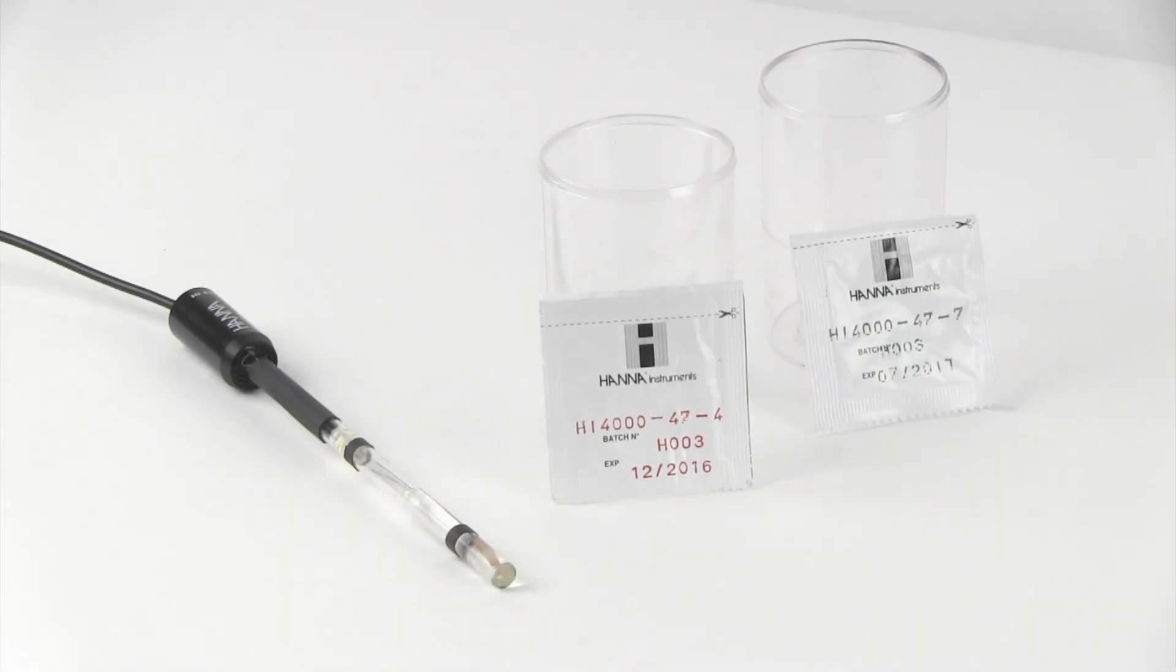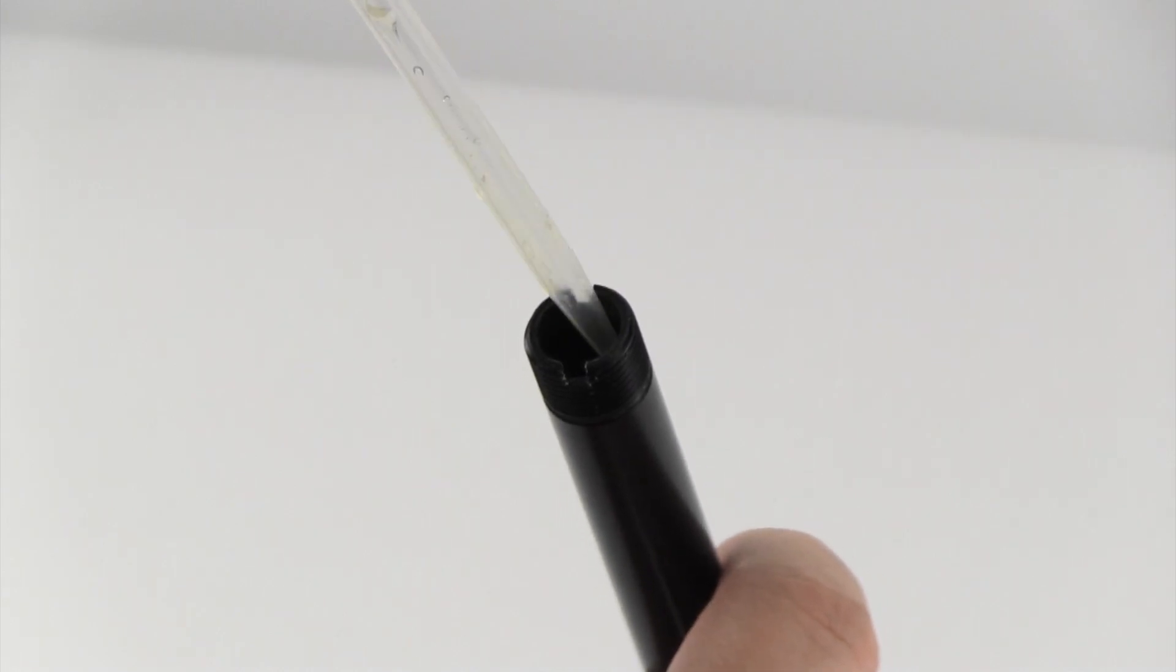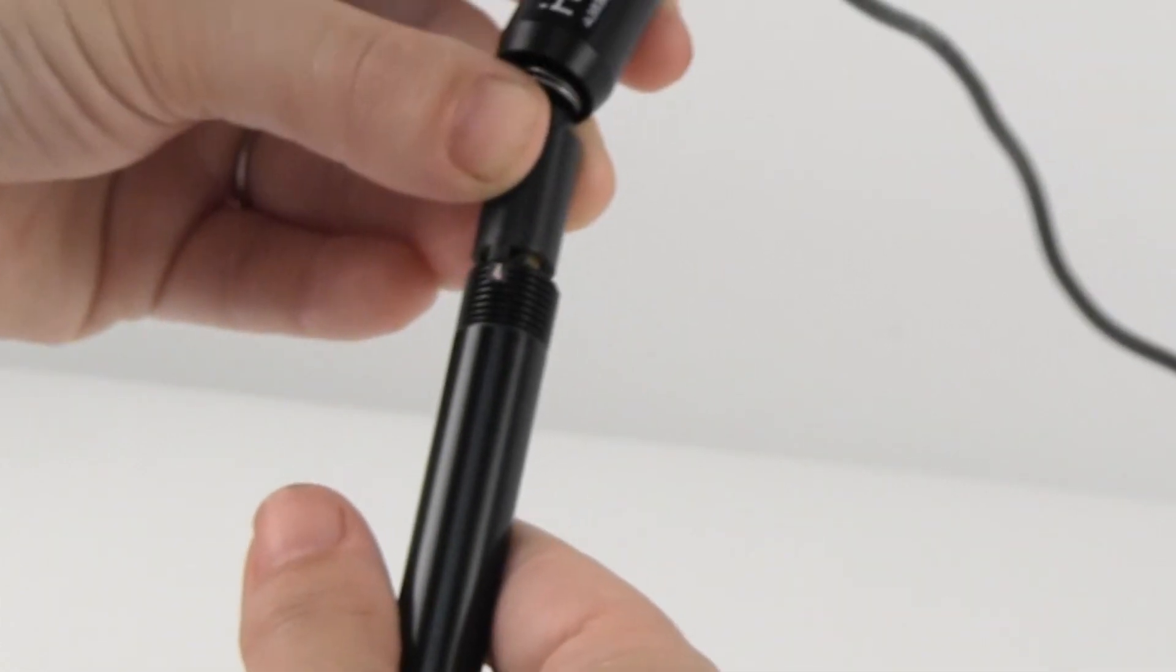Before reassembling the probe, you may want to perform a slope check on the inner pH sensor using the HI4000-47-7 and HI4000-47-4 buffer packets to ensure it is in good working condition. In the outer electrode chamber, add approximately 2 mL of HI4001-40 electrolyte.